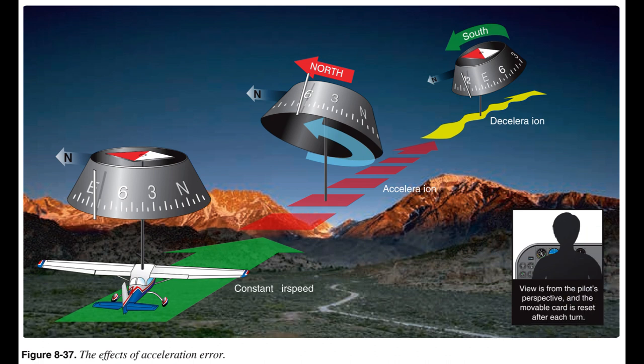The magnetic dip and the forces of inertia cause magnetic compass errors when accelerating and decelerating on easterly and westerly headings. Because of the pendulous type mounting, the aft end of the compass card is tilted upward when accelerating and downward when decelerating. When accelerating on either an easterly or westerly heading, the error appears as a turn indication toward north. When decelerating on either of these headings, the compass indicates a turn toward south. A mnemonic for the effect of acceleration error is the word ANDS — Acceleration North / Deceleration South.